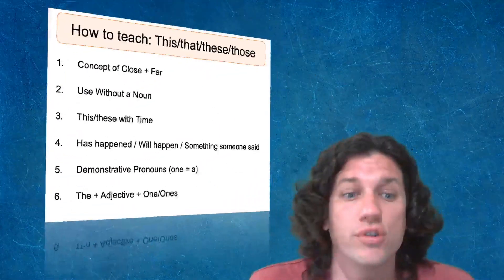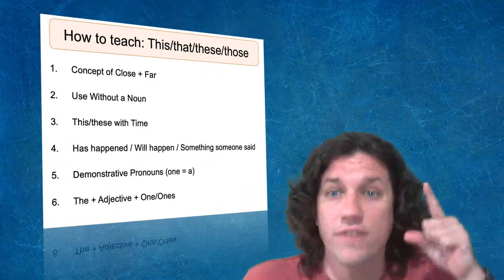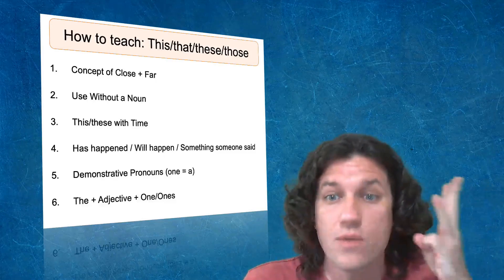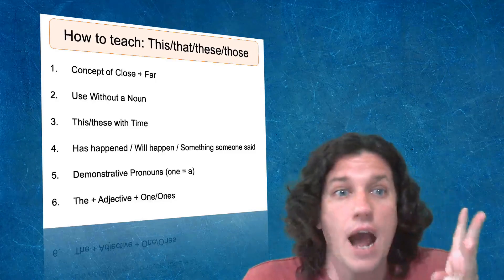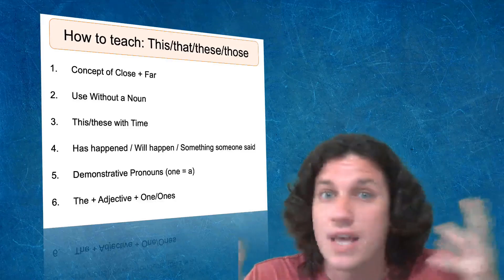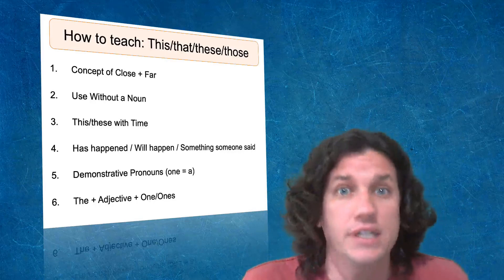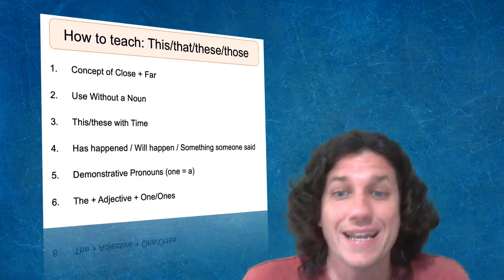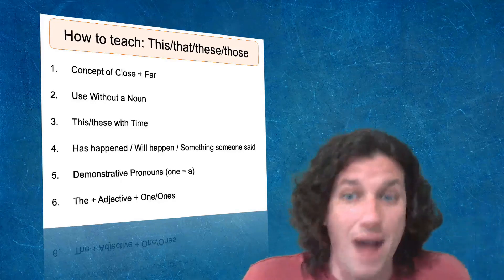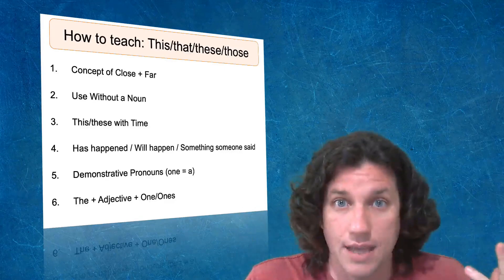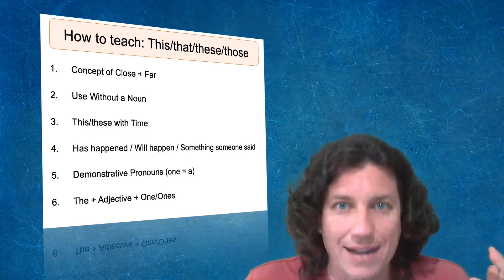So right now we've introduced three concepts. One, we've introduced the concept of close and far, two, without a noun, and three, with time. By this time, when you go over this with your students, this is about the time that usually students' heads are going to start to spin. It's a lot of material, especially if you're trying to do it in a condensed amount of time.